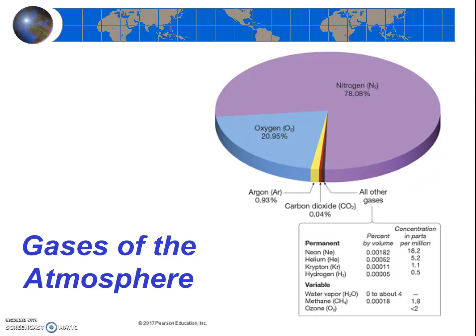Water vapor, methane, and carbon dioxide are especially important for climate and climate change, or global warming. What are the specific sources for each of these gases? Ozone is a bit different. In the troposphere, it's an anthropogenic — human-made — pollutant and also a greenhouse gas. But in the stratosphere, it helps protect the Earth from the Sun's ultraviolet radiation.